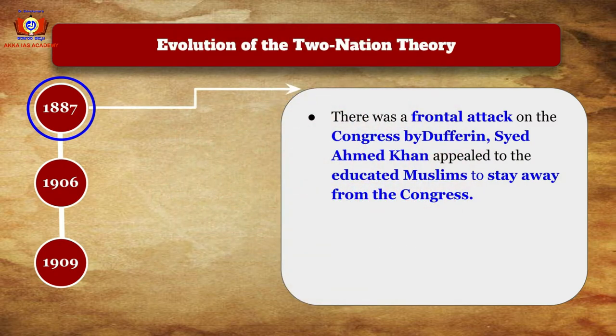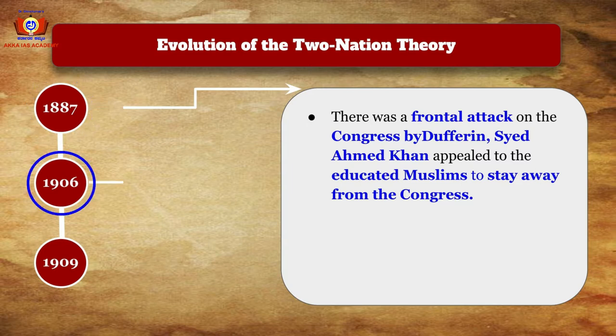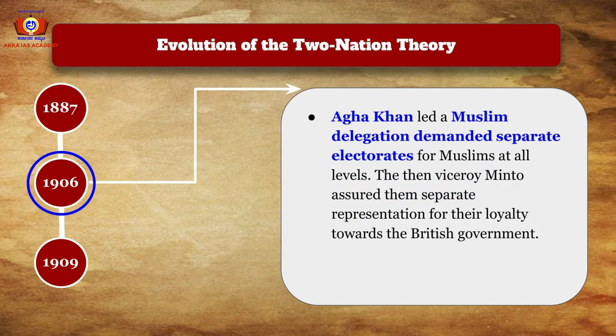This all started in 1887 with a frontal attack on the Congress by Dufferin, and Syed Ahmed Khan appealed to educated Muslims to stay away from the Congress. Then in 1906, Aga Khan led a Muslim delegation that demanded separate electorates for Muslims at all levels.